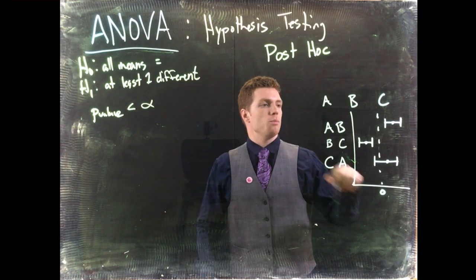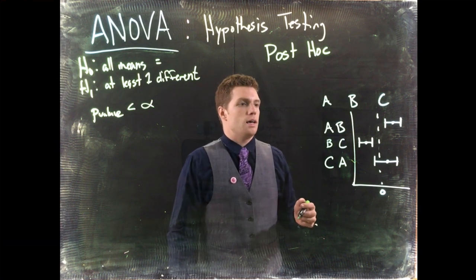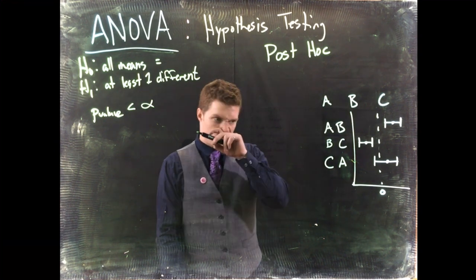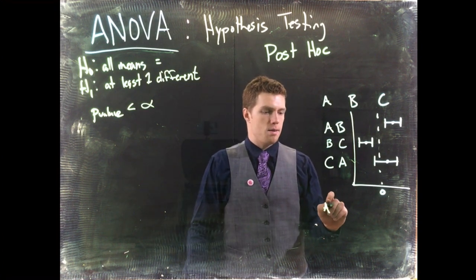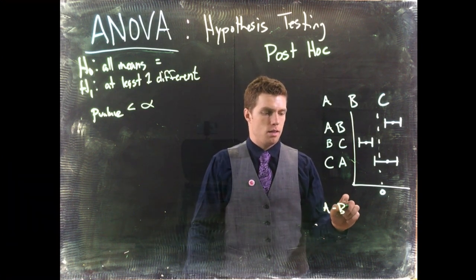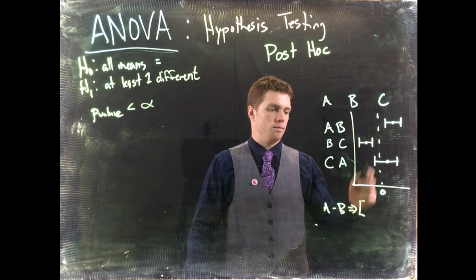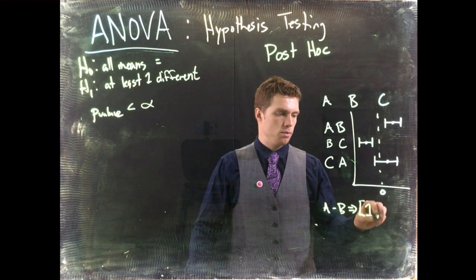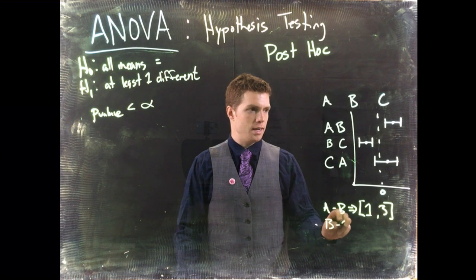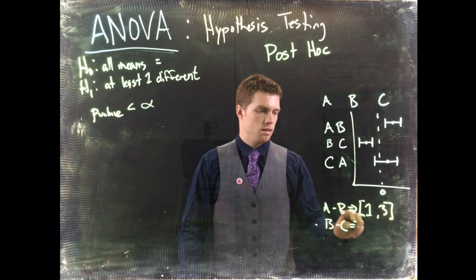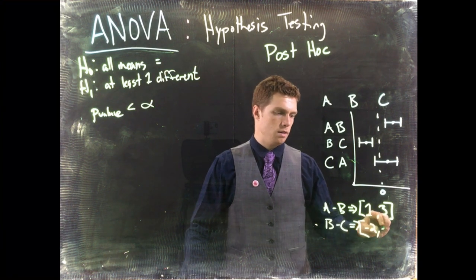So sometimes you'll see a plot like this or sometimes you'll actually see some values. Like suppose we got A minus B, our confidence interval would go from I don't know like 1 to 3, 1 comma 3. And then we would do B minus C and that gives us something like negative 2 comma negative 1.